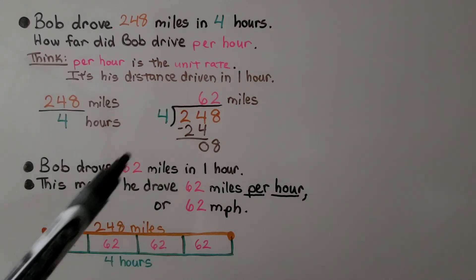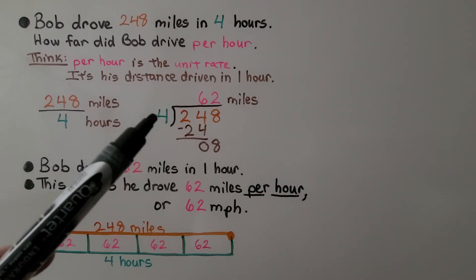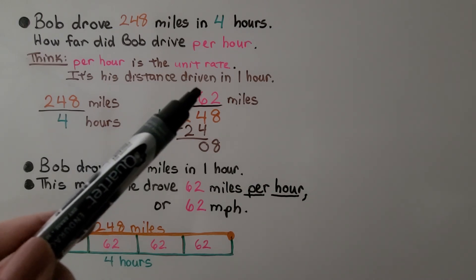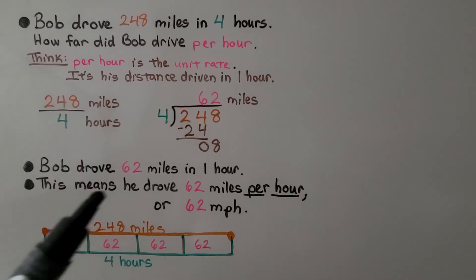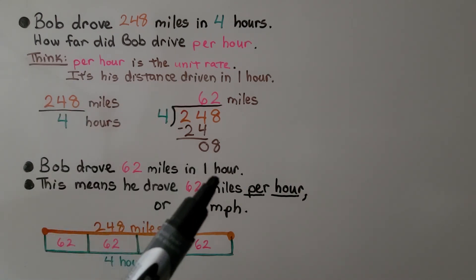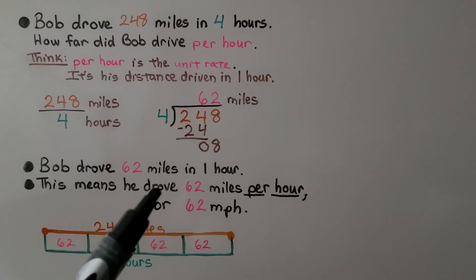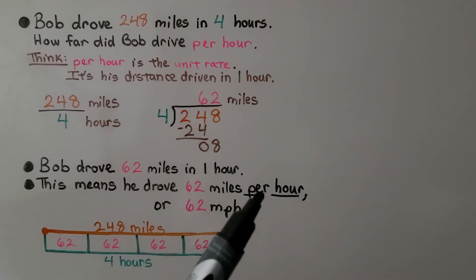So if he did 248 in 4 hours, we divide. We can use long division and we see it's 62 miles. That would be 1 hour. So Bob drove 62 miles in 1 hour.